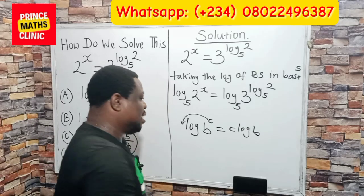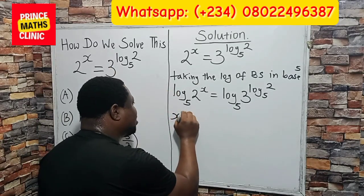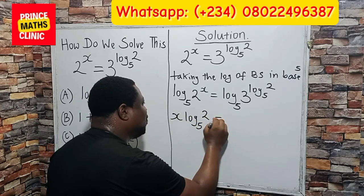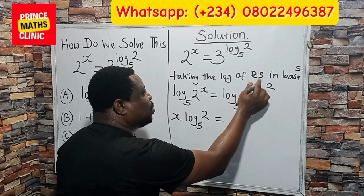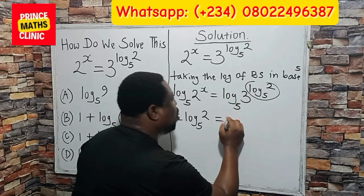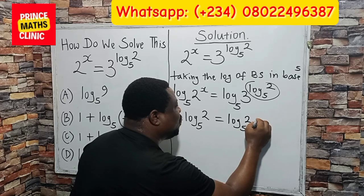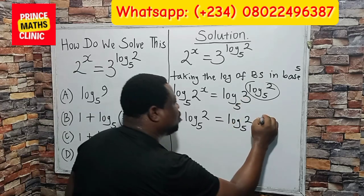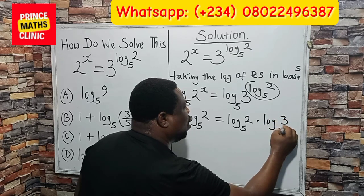That is what we are going to apply here. So our x will move here, giving us x times log of 2 in base 5. Then, everything here that is a power will now move to this part, giving us log of 2 base 5 times log of 3 in base 5.